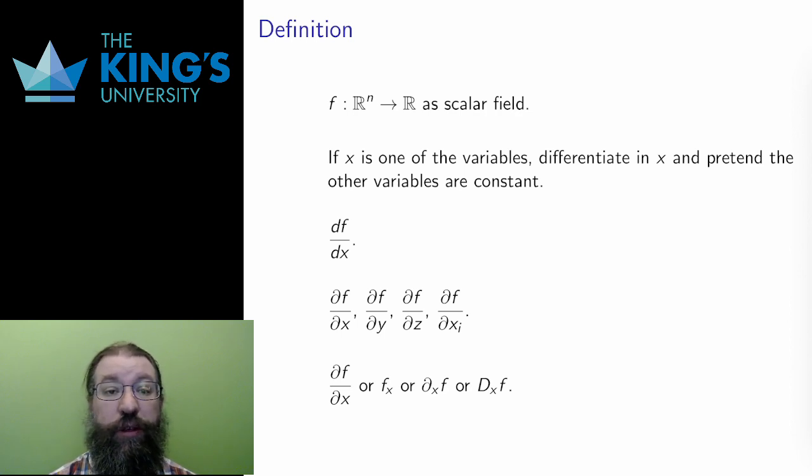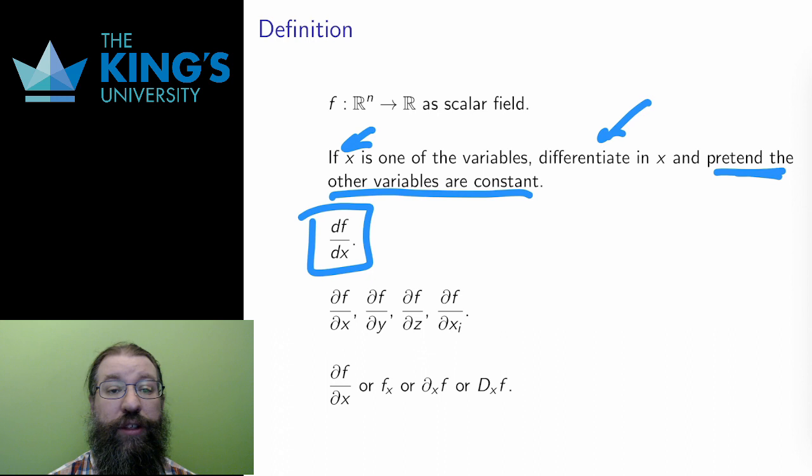To take a partial derivative of a scalar field, I choose one variable and pretend that all the other variables are constant. And then I just take a normal single variable derivative in the chosen variable. The Leibniz notation for the single variable derivative of f of x is df over dx. This notation is very useful to generalize because it names the variable in the denominator. The most common notation for a partial derivative is this Leibniz notation, but with the d's stylized this way.